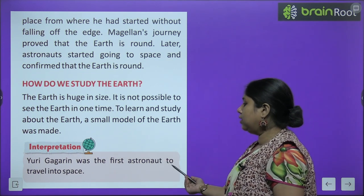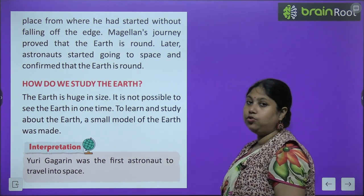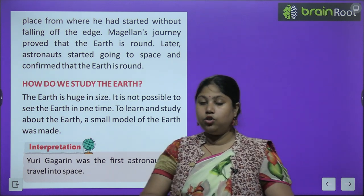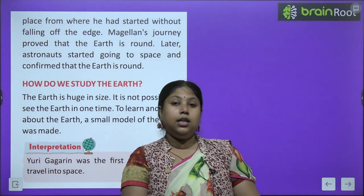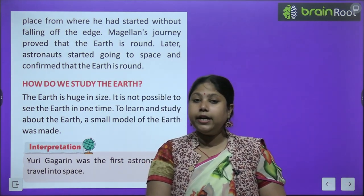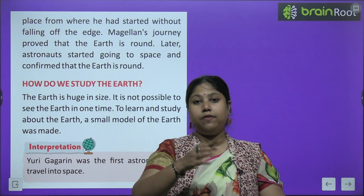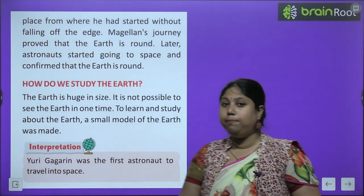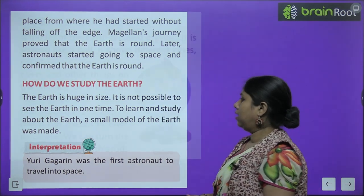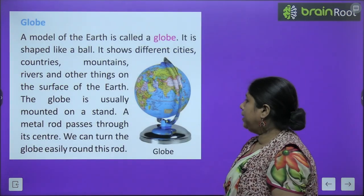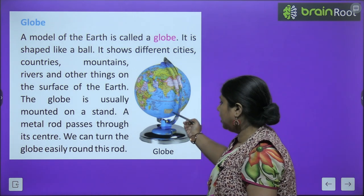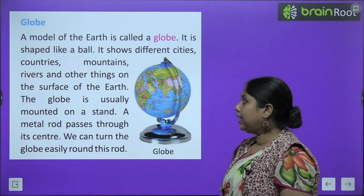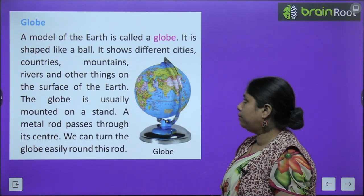Yuri Gagarin was the first astronaut to travel in space — ye ek naya general knowledge hai aap logon ke liye ki Yuri Gagarin was the first person to travel in space, space mein jaane wale pehle vyakti the. Ab ye jo small model hai earth ka, isko hum kya bolte hain? Globe. Toh aayiye globe ke baare mein padhte hain.